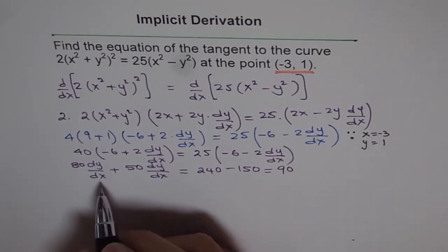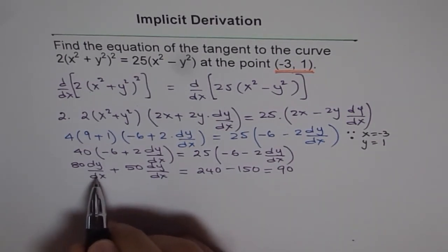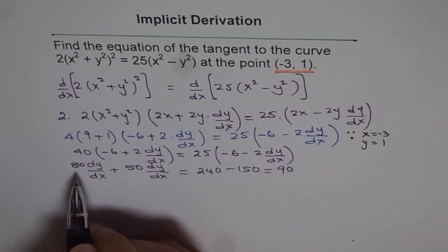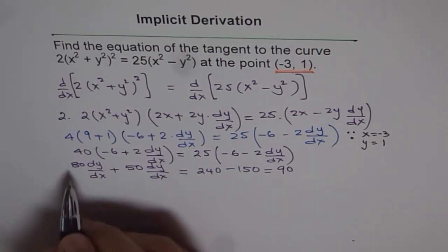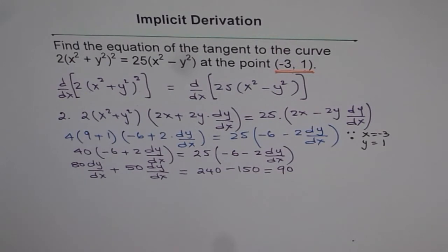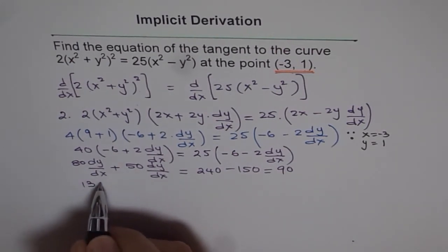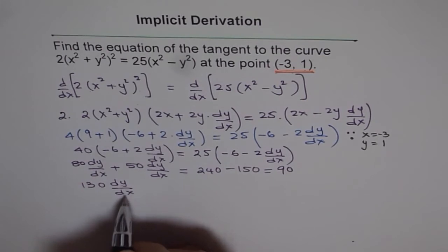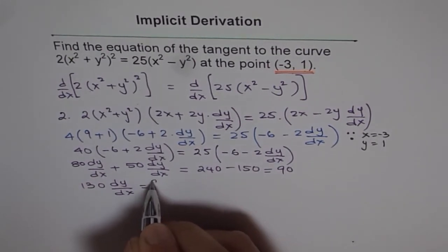Which I can write as 240 minus 150 is 90. If I do some mistakes here, just pardon me. These are big numbers. We'll take dy/dx common here, and we get 80 plus 50, so that is 130. So we'll write here 130 dy/dx equals 90.